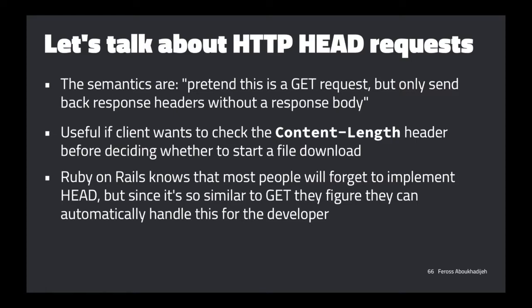Because HEAD is relatively obscure, Ruby on Rails — the framework GitHub used — knows most people won't bother implementing HEAD request handling. So it does it for you: it routes any HEAD request to the same place as GET requests, runs the same controller code, and just deletes the response body before sending the response. Express also does this. The reason this is safe for GET is that GET requests aren't supposed to change anything — they're not modifying the database or being destructive. You can repeat a GET as many times as you want. You couldn't do this with POST or other mutating methods.